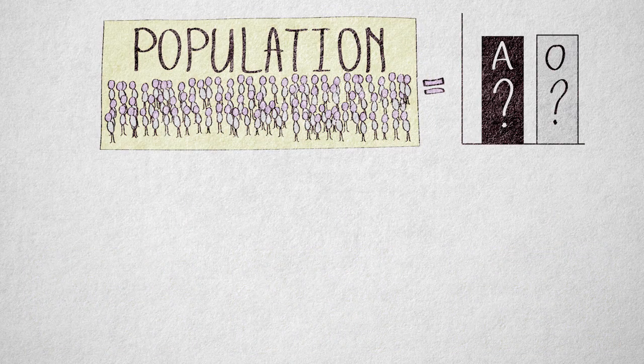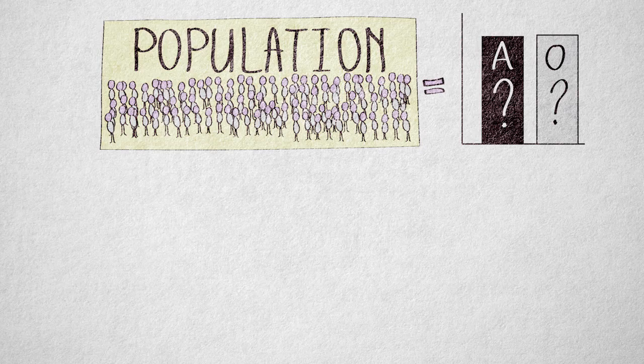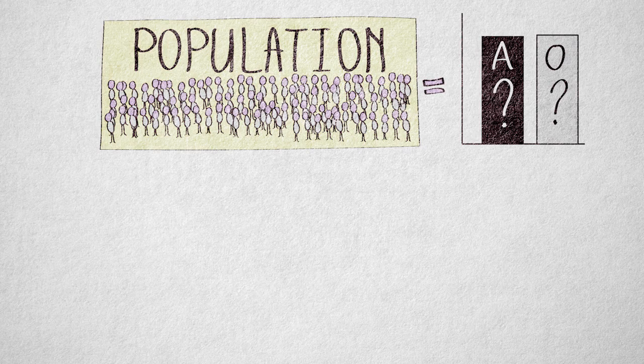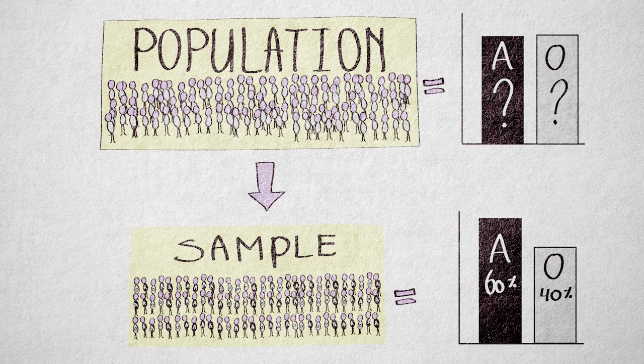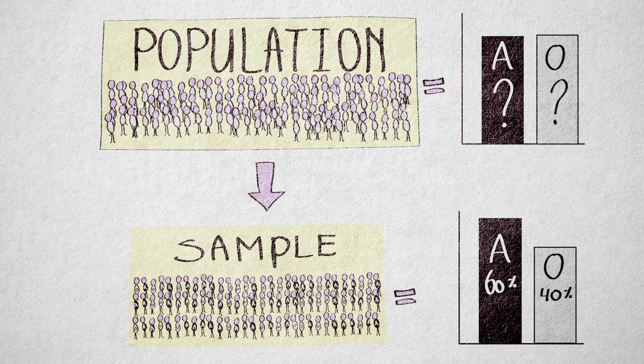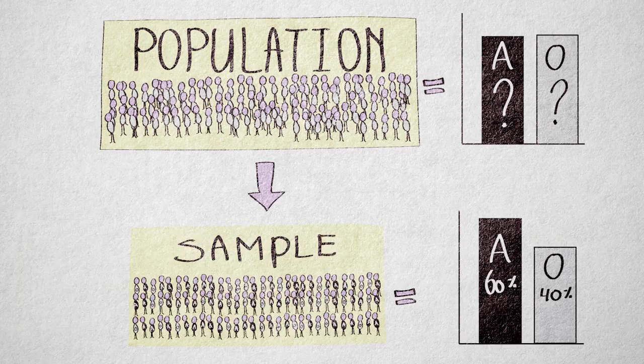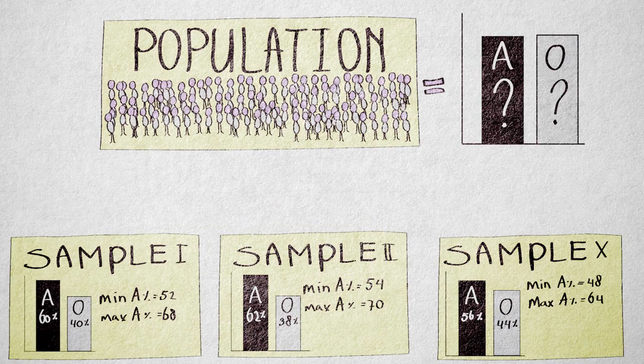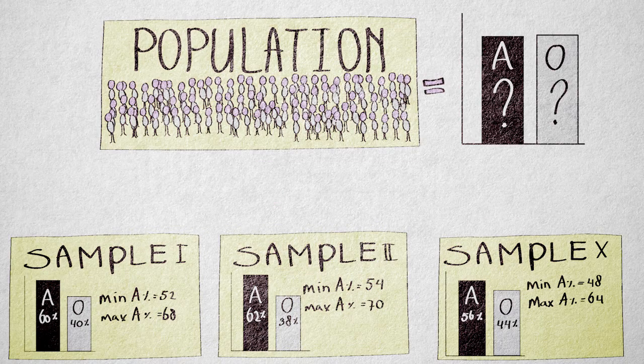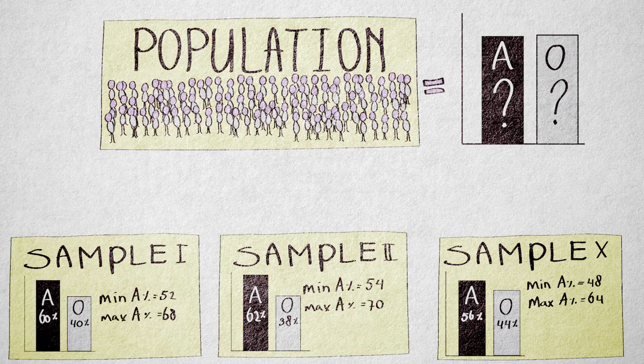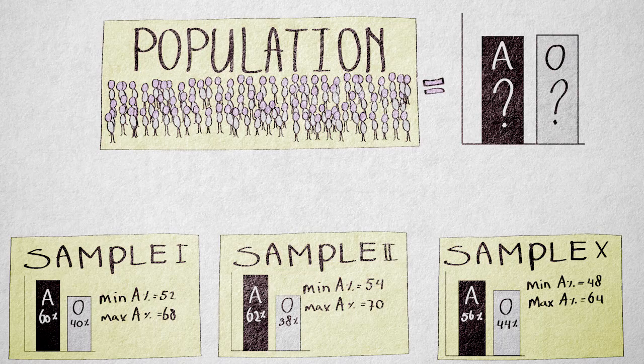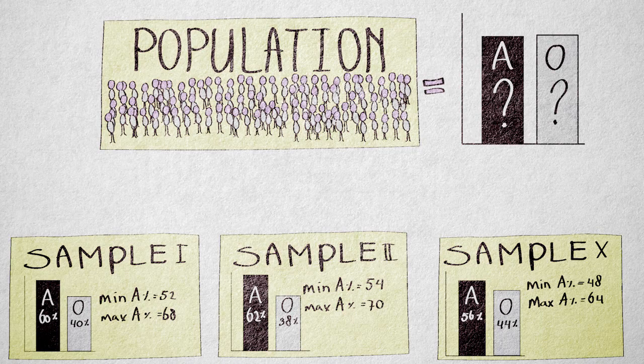Suppose we want to estimate the proportion of people that will vote for candidate A in an election. We sample 100 eligible voters and find that 60% of the sample says they'll vote for A. We have to decide how confident we want to be. Let's say that with repeated sampling, we want the population value to fall within the margin of error at least 90% of the time. With this decision, we can now calculate the margin of error. Let's say that the margin of error is 8%.